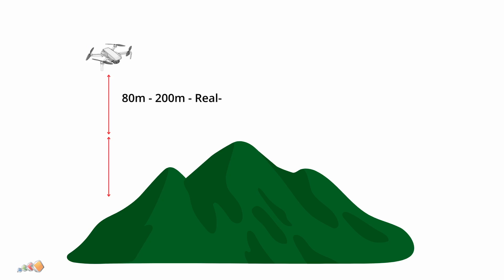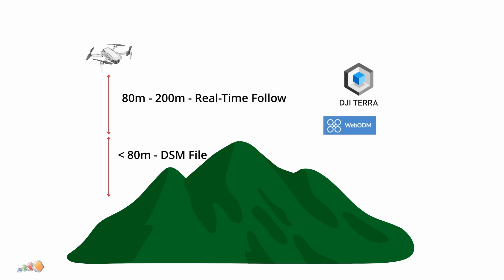First, real-time terrain following currently supports flights from 80 to 200 meters. For flights below 80 meters, it's recommended to import a DSM file, which you can generate using DJI Terra, or if you don't have a DJI Terra subscription, you can generate these using other software such as WebODM — and I'll be covering that in a future video.